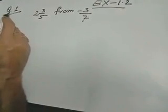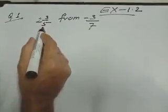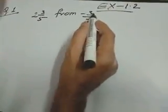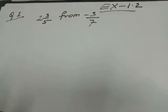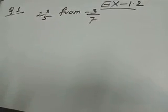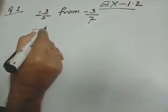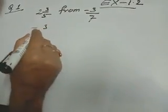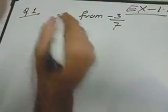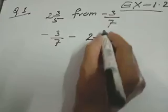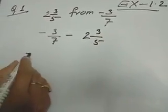Question number one. Subtract 2 whole number 3 by 5 from minus 3 by 7. First we will write minus 3 by 7. Subtract means minus sign. What to subtract? 2 whole number 3 by 5. Now you solve it.